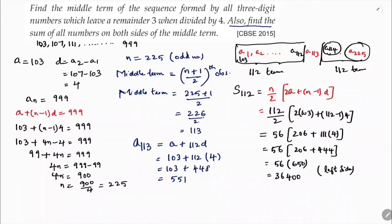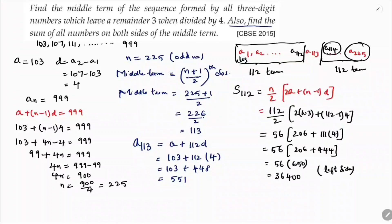Now we need to calculate the sum of all terms on the right side. One method is to calculate the total sum of all 225 terms and subtract the sum of the first 113 terms.